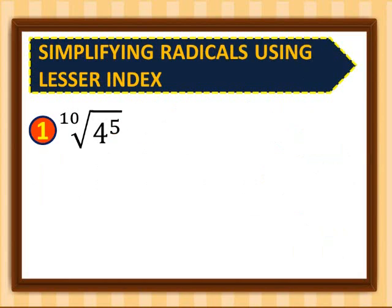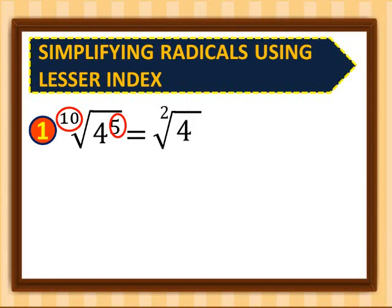Now, simplify the radicals using the lesser index. For number 1, we have the 10th root of 4 raised to 5. We simply divide the index 10 by the exponent 5: 10 divided by 5 gives us index 2, and we copy the radicand 4. In mathematics, we do not write the index 2 explicitly, so it's just the square root of 4, which equals 2.